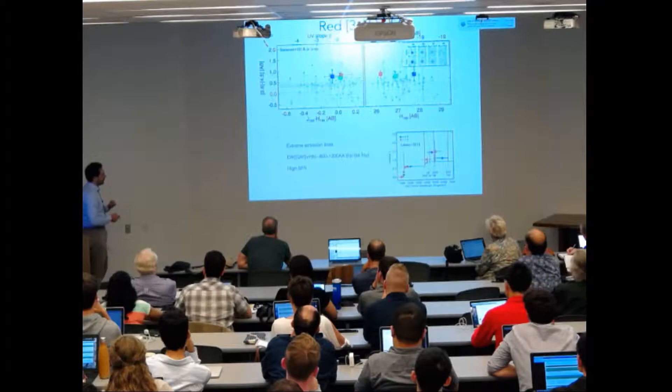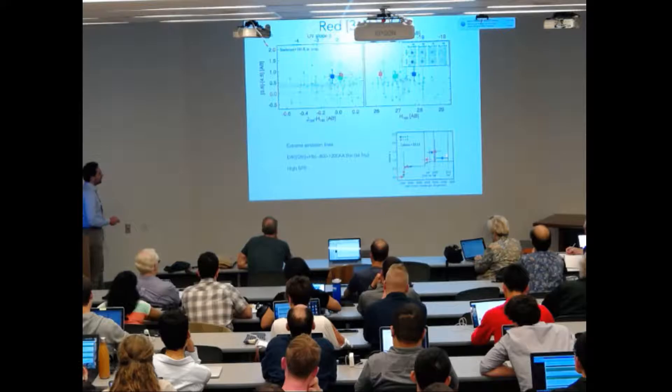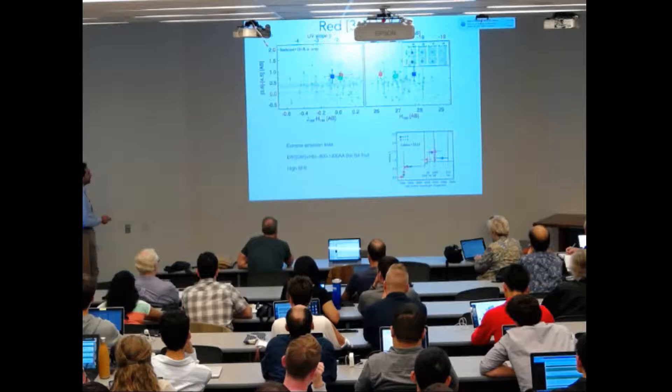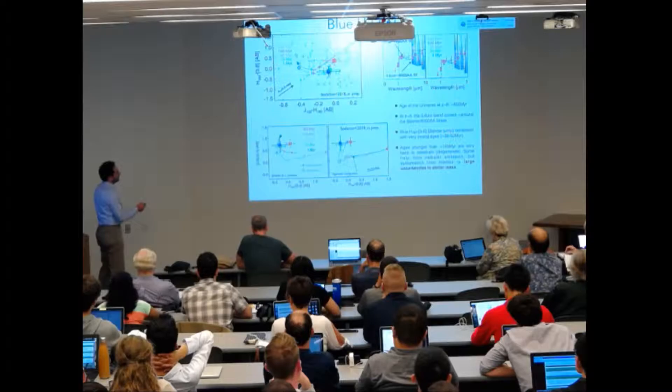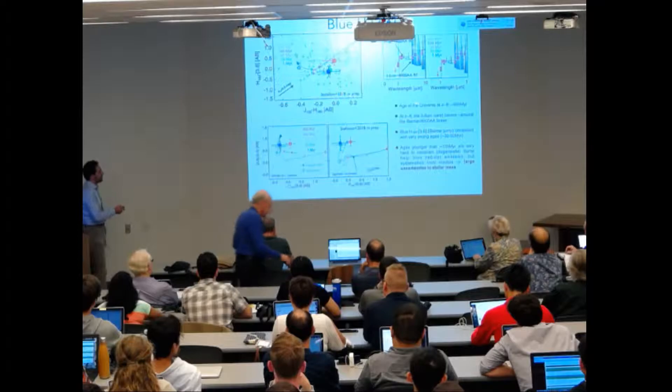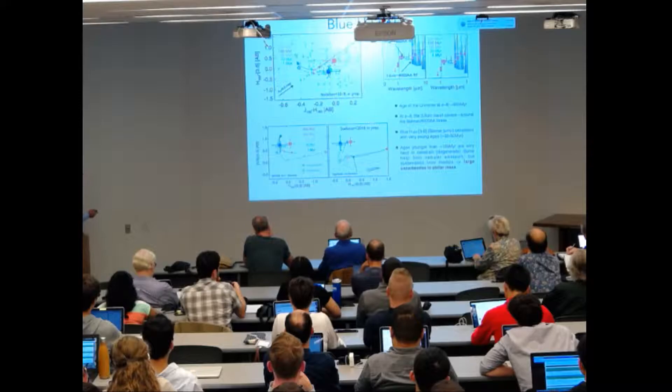At redshift eight, the O3 and H-beta enter the 4.5 micron band, so a very red 3.6 minus 4.5 means that we likely have very strong emission lines, extreme emission lines from O3 and H-beta, and this means also very high star formation rate. On the other side, at redshift eight, the H-band lies at about 1800 angstrom rest frame and the 3.6 is about 4000 angstrom rest frame.